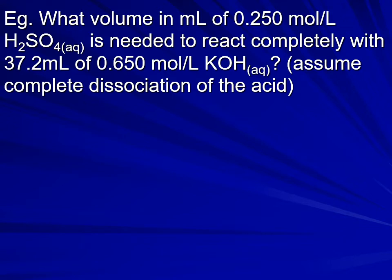A calculation question for this might look like the following: find the volume in milliliters of a 0.250 mol/L sulfuric acid solution needed to completely react with 37.2 milliliters of 0.650 mol/L potassium hydroxide. This is essentially a stoichiometry question where the reaction involves an acid and a base, and we need to figure out how much of one is needed to neutralize the other.